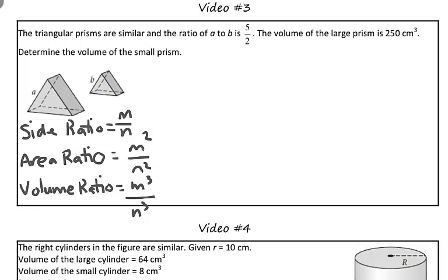In this problem, we are told that the triangular prisms are similar, and the ratio of A to B is 5 over 2. Well, 5 over 2 is their side ratio. That's what it's referring to. A and B are both lengths of the sides of these triangular prisms. So, we are told the volume of the large prism is 250 centimeters cubed, and we are asked to find the volume of the small prism.